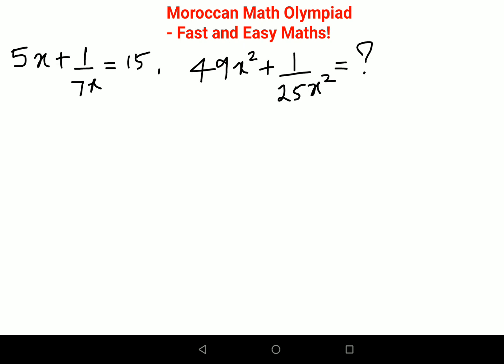Here we have 5x plus 1 upon 7x equals to 15, and we need to find 49x square plus 1 upon 25x square.